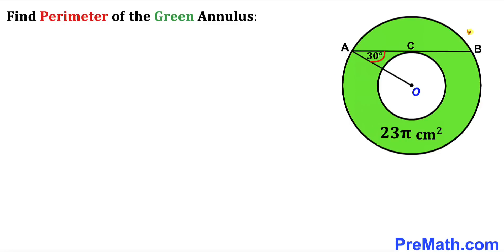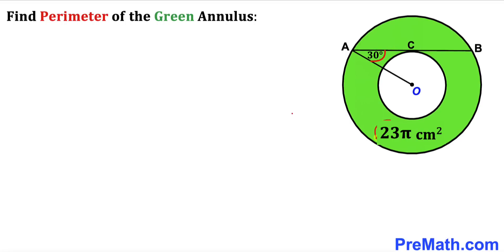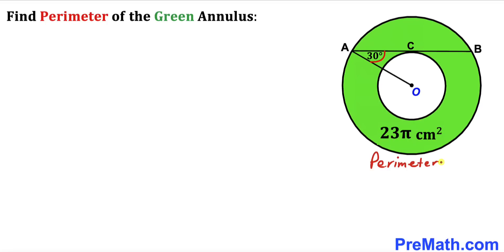In this video we have got two concentric circles with center O, and as a result we get this green shaded donut ring as you can see in the diagram. Moreover, this chord AB is tangent to the small circle at point C. Furthermore, the angle between the radius and this chord is 30 degrees, and the area of this green shaded annulus is 23π square centimeters. Now we are going to calculate the perimeter of this green shaded region, which is also called the annulus.